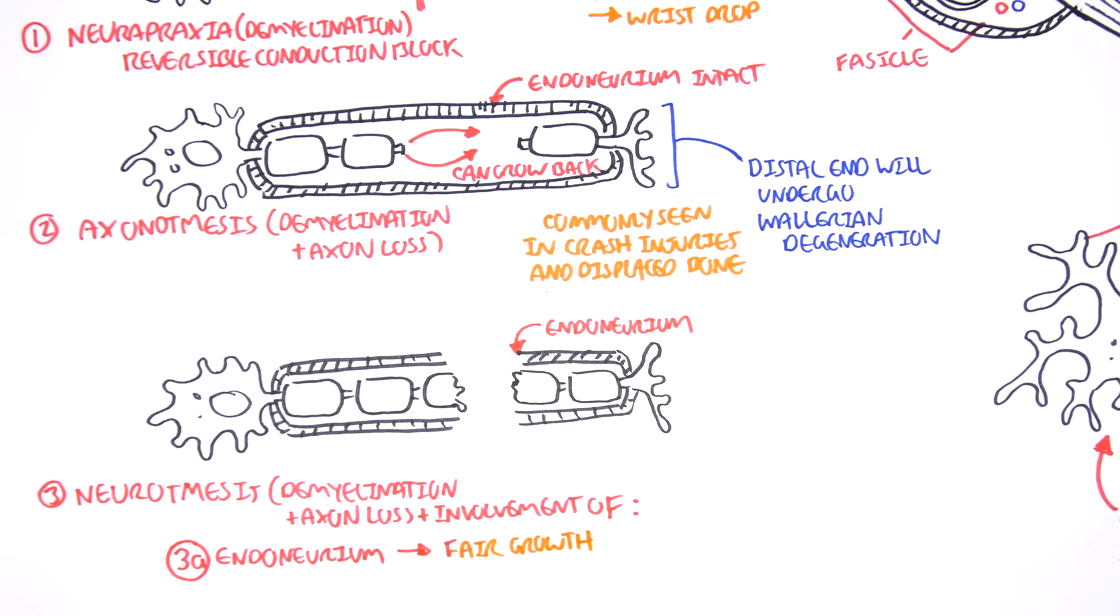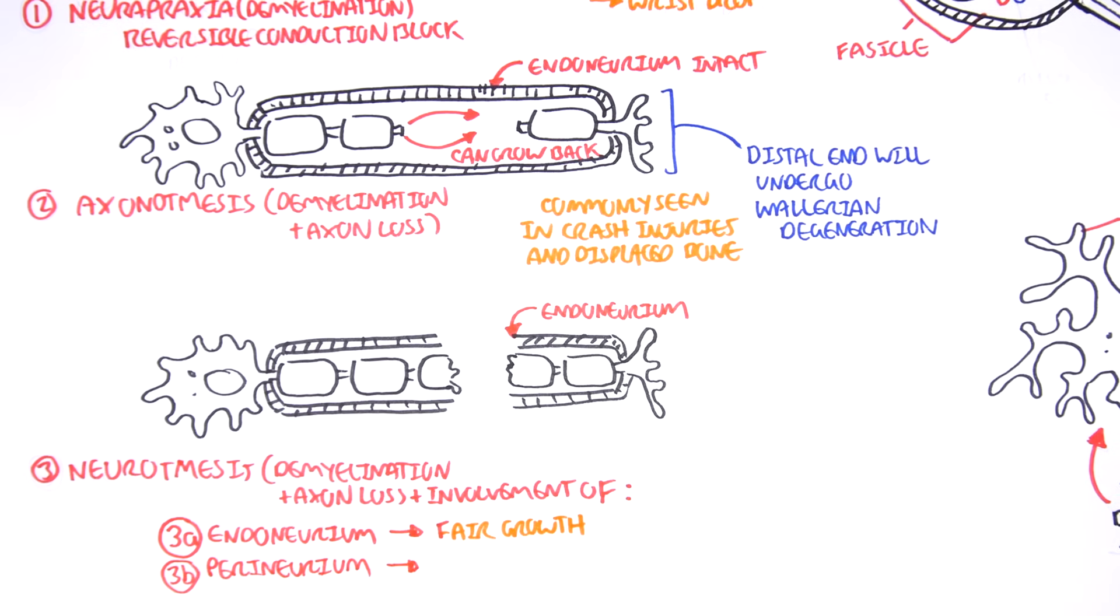Because you can think of the endoneurium as sort of like a pathway telling where the neuron should grow back. And then, or you can have involvement of the perineurium. And if you remember, the perineurium is the sheath surrounding a fascicle. And if this was damaged, you would have poor growth.